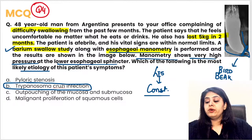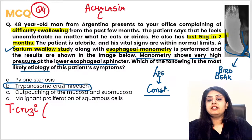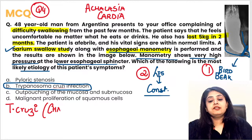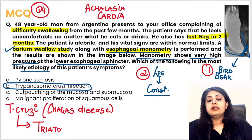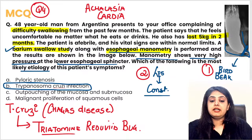This case comes into microbiology because achalasia cardia is associated with Trypanosoma cruzi, which causes Chagas disease. The vector is the triatomine reduviid bug — also known as the kissing bug, a nocturnal bug. The lower esophageal sphincter is constricted due to the infection, and this is a classical case of achalasia cardia caused by Trypanosoma cruzi.